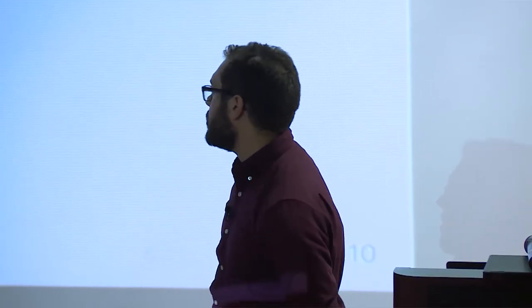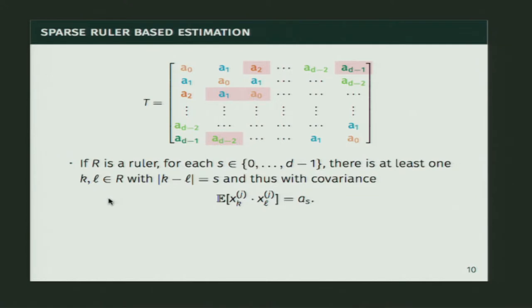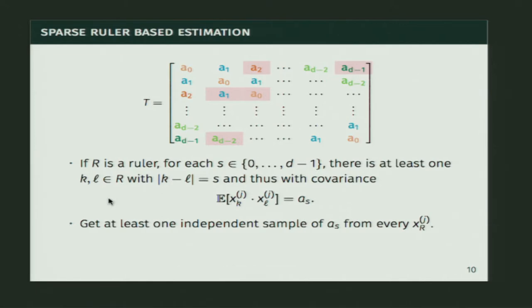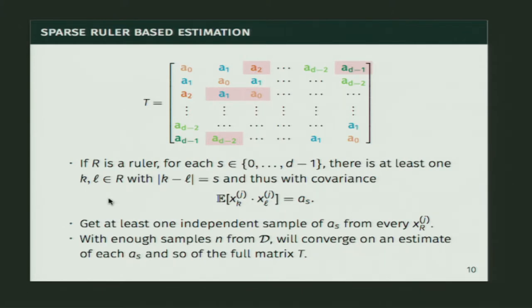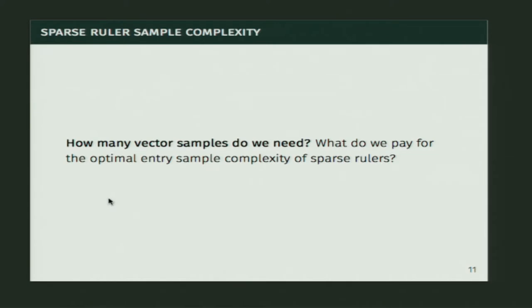How do we use sparse rulers to estimate the Toeplitz covariance matrix? If R is a ruler, for every distance s I have at least one pair in R with that distance, so I can estimate every entry a_s of my covariance matrix by averaging the correlation between x_k and x_l over all ruler pairs at that distance. So I get one independent sample of a_s from every sample I take from my distribution. As my number of samples goes to infinity, I converge on an estimate of T — the question is how many vector samples we actually need.